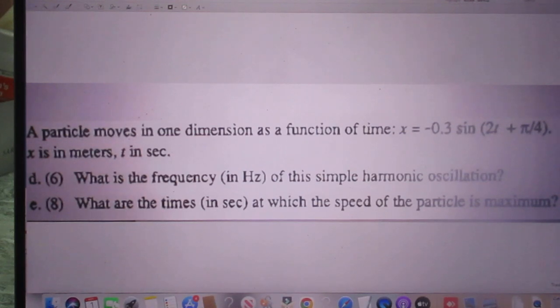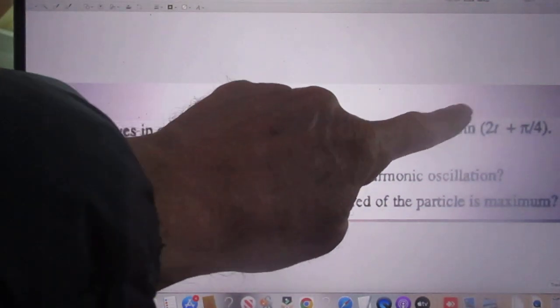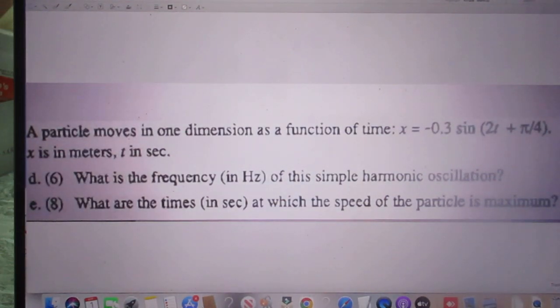Before I show you the solutions to questions 3 and 4 let's read the problem again because it's not a pendulum in this case. A particle moves in one dimension, the x direction, as a function of time x is -0.3 times the sine of (2t + π/4). And x is in meters and t is in seconds. So the third question is what is the frequency in hertz of this simple harmonic oscillation?